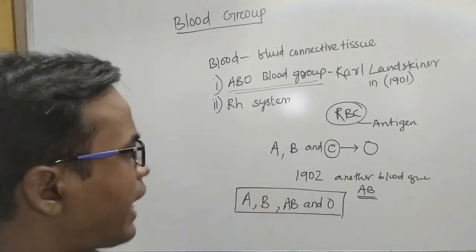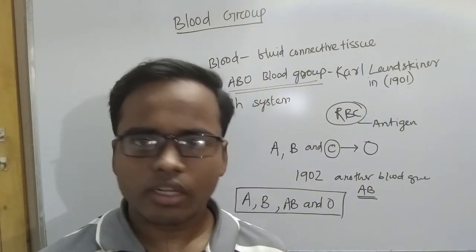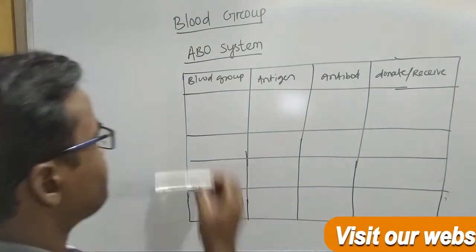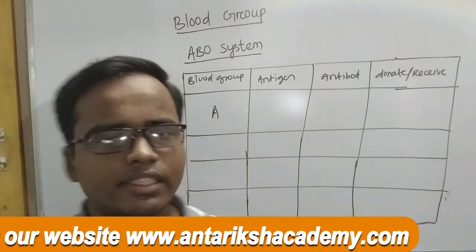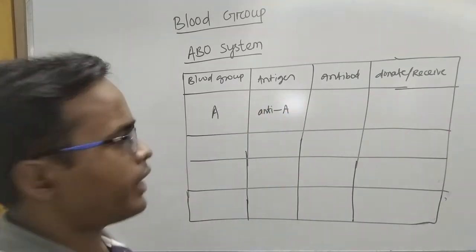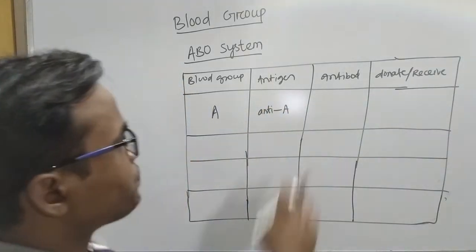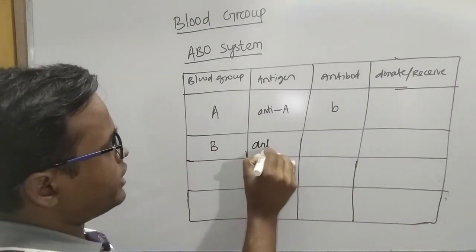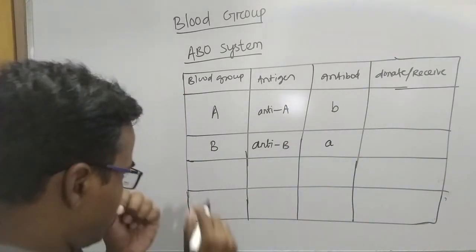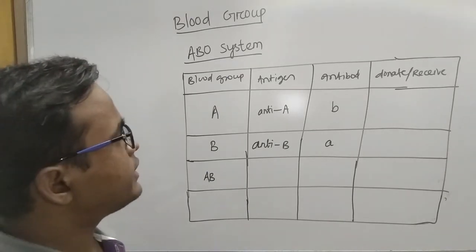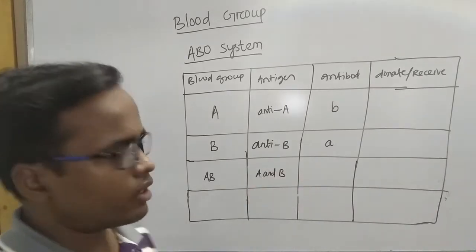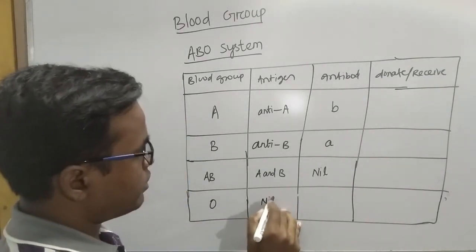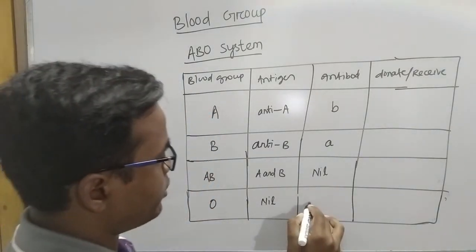Let us discuss the antigens and antibodies for each blood group in the ABO system. Blood group A contains antigen A and antibody B. Blood group B contains antigen B and antibody A. Blood group AB contains both antigen A and antigen B, with no antibodies. Blood group O has no antigen, and contains antibodies A and B.